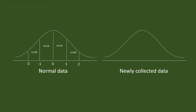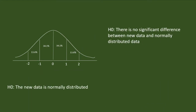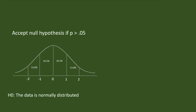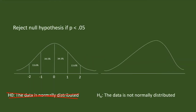While testing normality, we do a comparison between the data we collected and the mathematical model of the normally distributed data. The null hypothesis is: there is no significant difference between the new data that we collected and the normally distributed data. We will accept the null hypothesis if p is greater than 0.05, and reject the null hypothesis if p is less than 0.05.